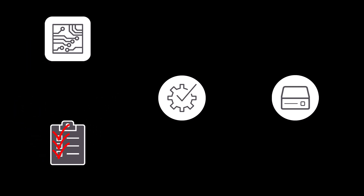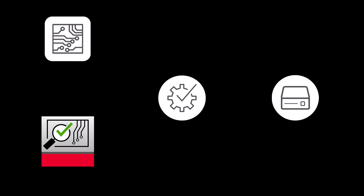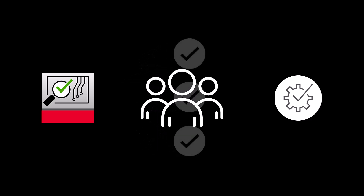Verifying signal integrity early with simulation instills control and confidence. It enables the design team to mitigate issues before they escalate, avoiding last-minute fixes and costly respins. Early verification allows for delivering high-quality, robust designs with pride.